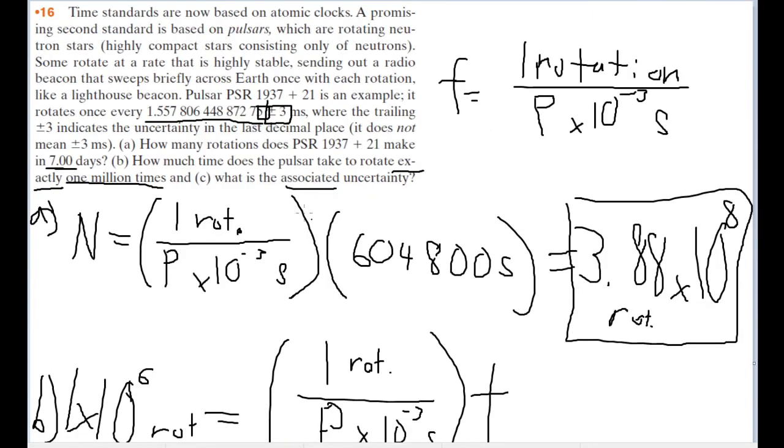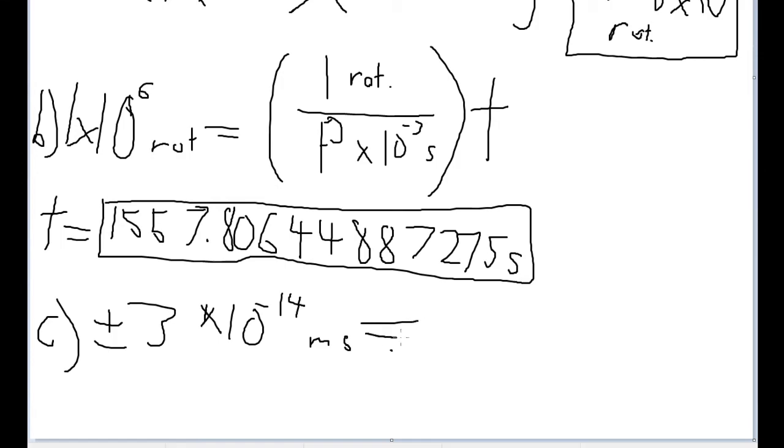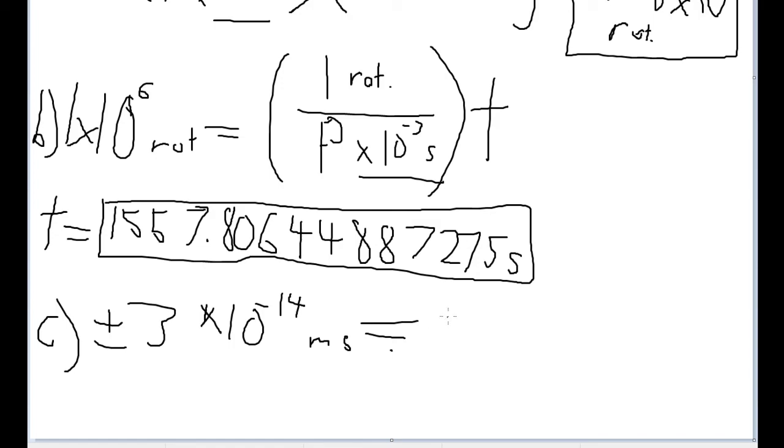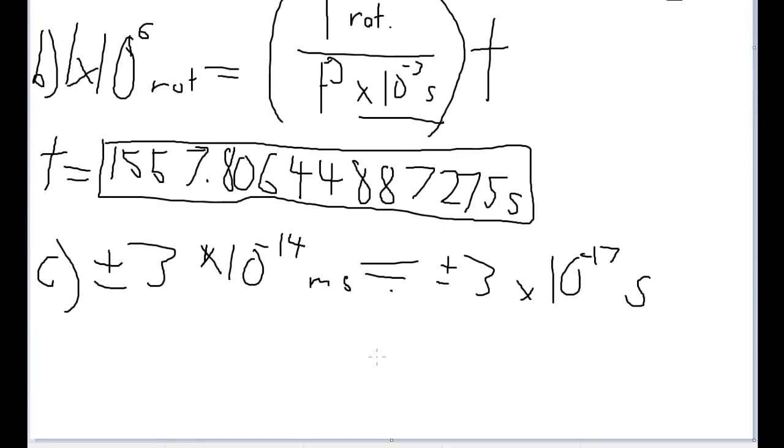But once again, I'm going to convert to seconds to make our values a little bit easier here. So that is going to be times 10 to the negative 3, as we've been doing up to this point in our previous problems. So our actual uncertainty, then, that we're going to be working with here is plus or minus 3 times 10 to the negative 17 seconds. And now we just want to multiply this by 1 million.